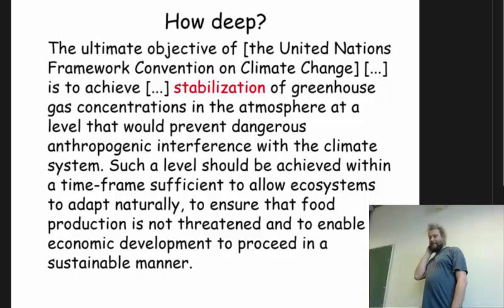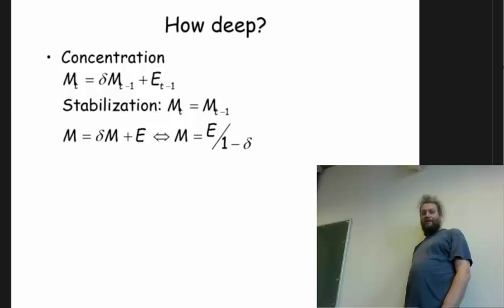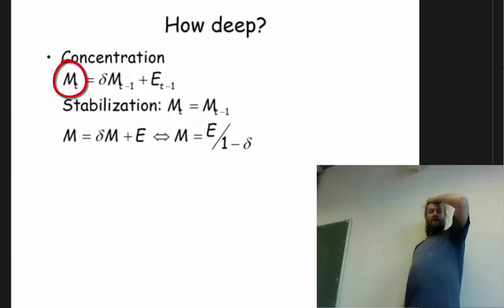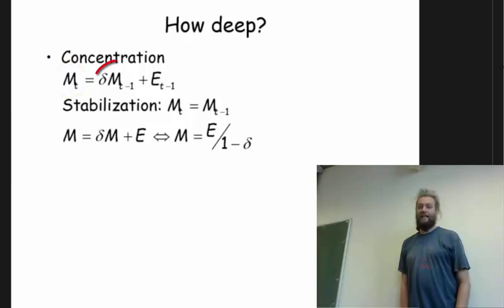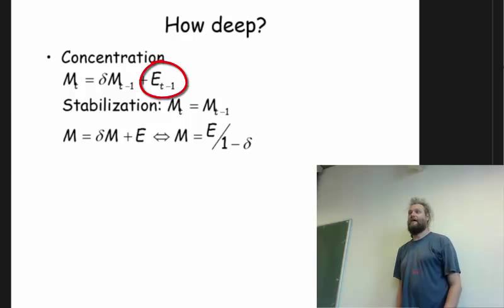And those implications come from the carbon cycle. So if the concentration of greenhouse gas in the atmosphere, M, follows a linear difference equation, essentially the concentration at time t is slightly less than the concentration at time t minus 1, plus however much additionally goes into the atmosphere. And that is our conceptualization of the carbon cycle.